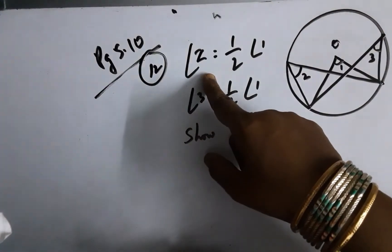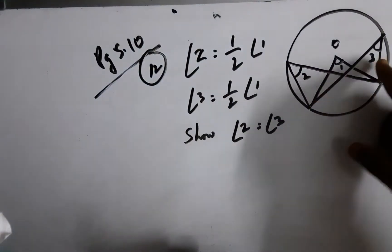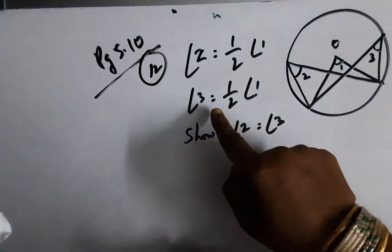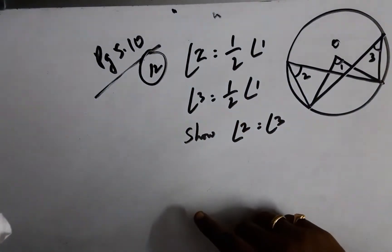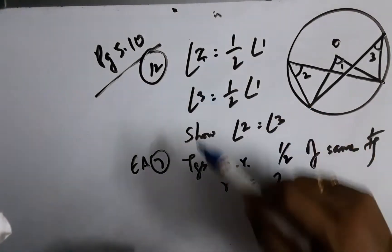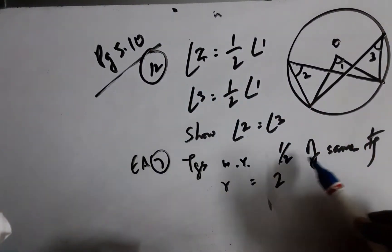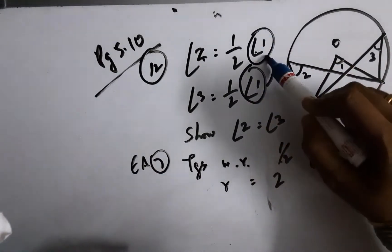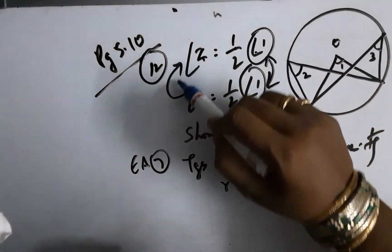It has been given angle 2 is half of angle 1 and angle 3 is also half of angle 1. The Euclid's axiom states things which are half of the same thing are equal to one another.